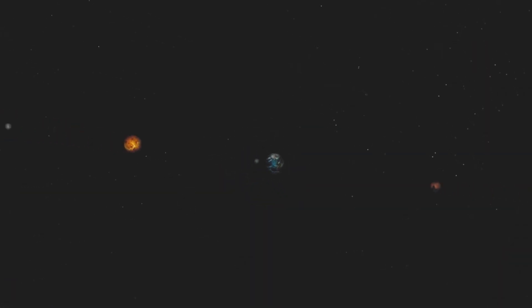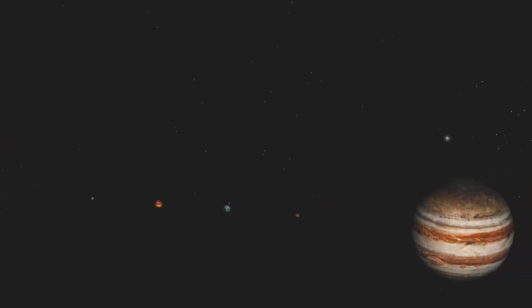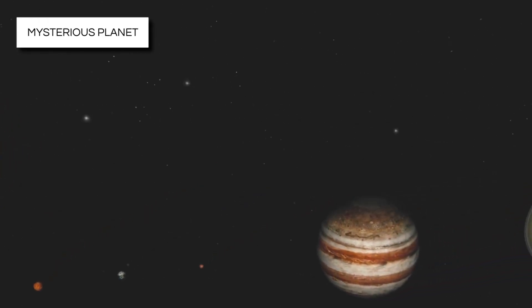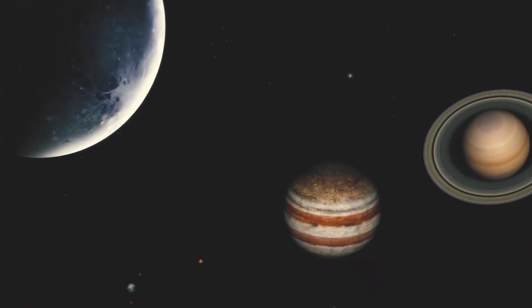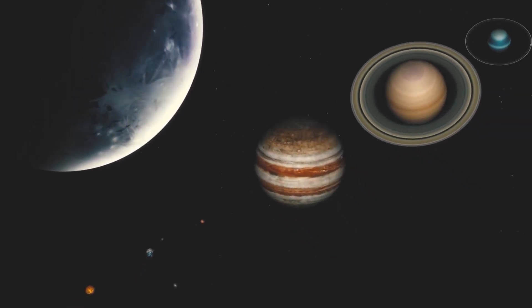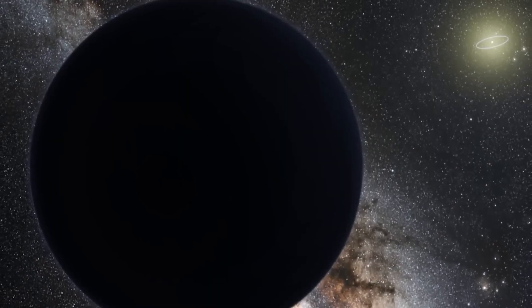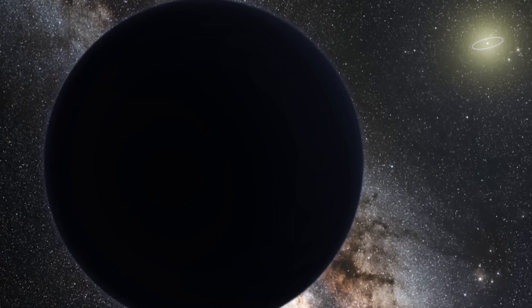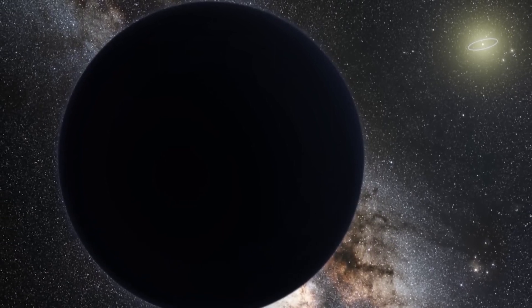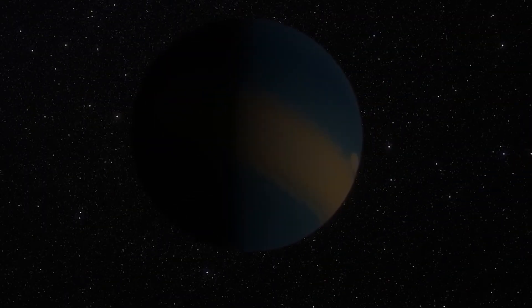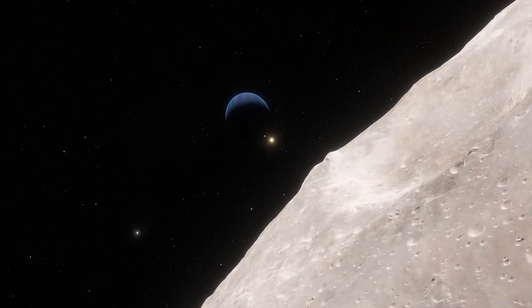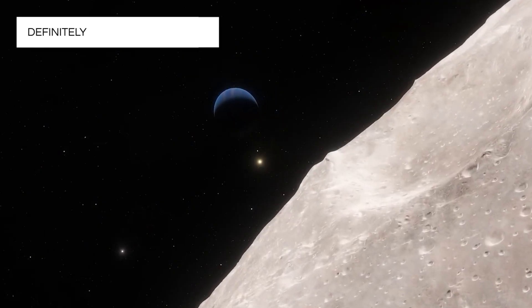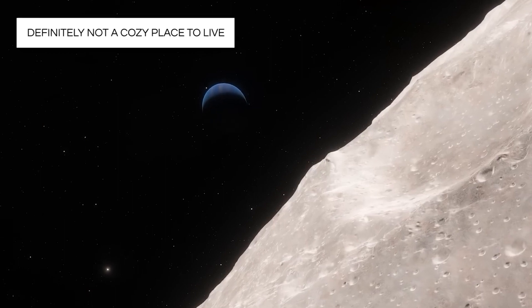But here's the twist. A while back, some other scientists suggested the idea of this mysterious planet, and they've come back with much new evidence. They think this planet might not be as big as we first thought, and could be much closer to Earth's size. It's like a dark, frozen world. Maybe not too different from Earth in terms of mass, but definitely not a cozy place to live.